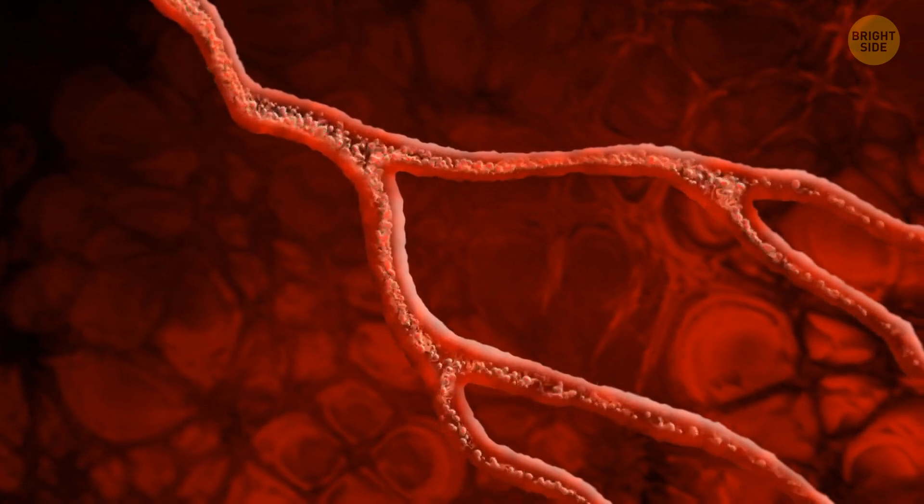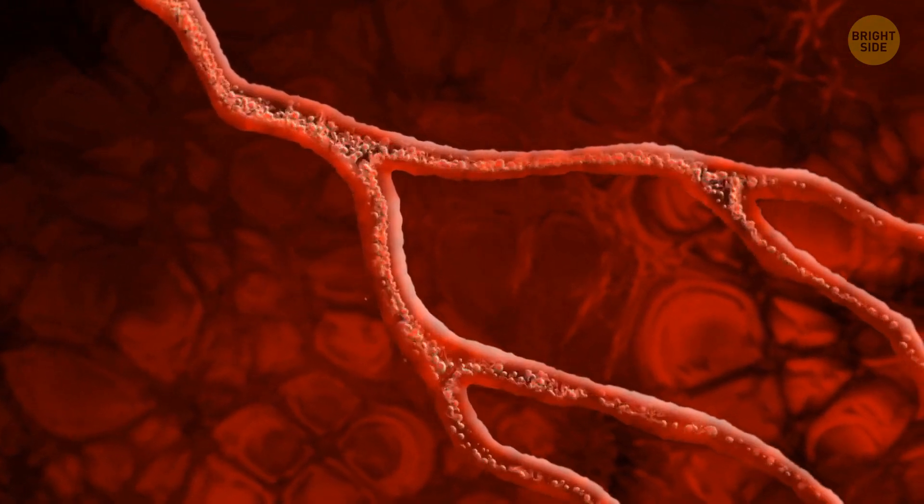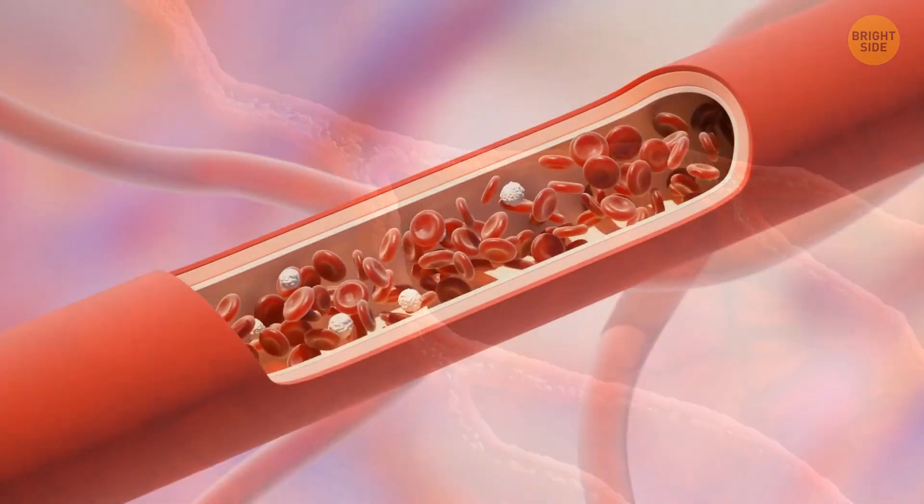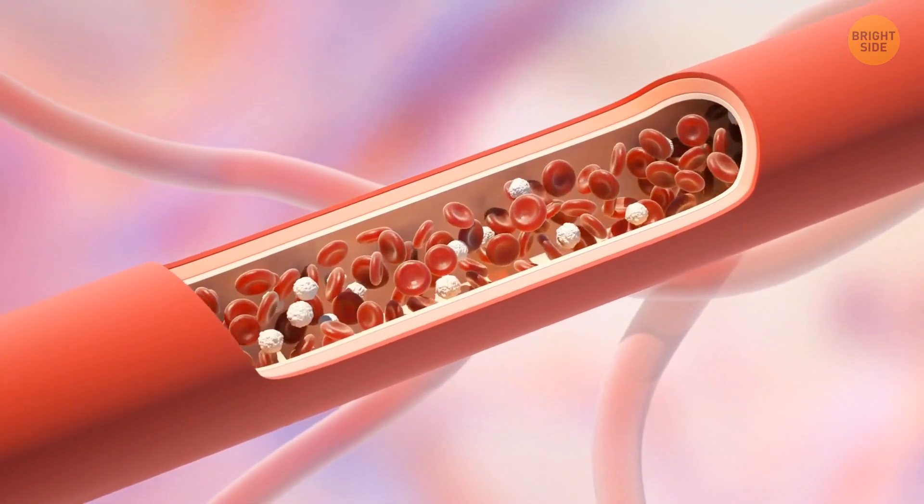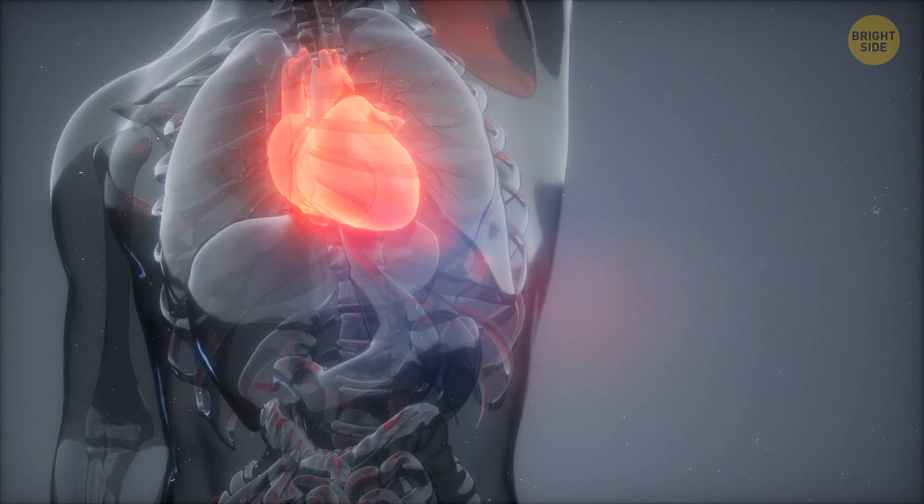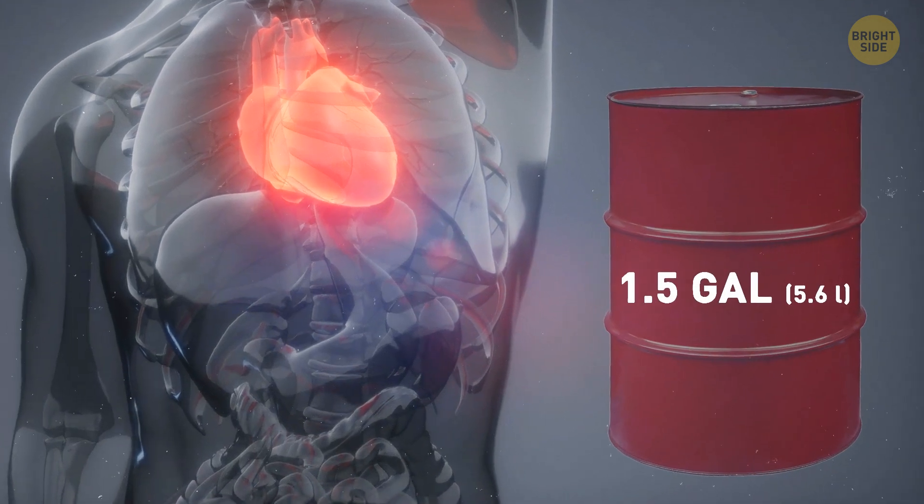Each time this organ gets a little thump, it's pushing about 2.4 ounces of blood around your body. If your resting heart rate is 80 beats per minute, your heart's pushing 1.5 gallons of blood every 60 seconds.